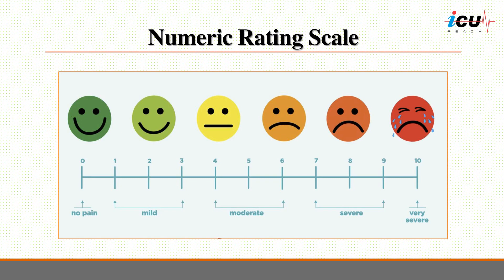The most common self-report method for pain assessments are numeric rating scales, typically from 0 to 10, with 0 representing no pain and 10 representing severe pain. A preferred scale for ICU patients who may not be able to verbalize but are interactive is the visual numeric pain rating scale, in which the scale is shown in large font, with no pain next to the number 0 on the left side and extreme pain next to the number 10 on the right side.